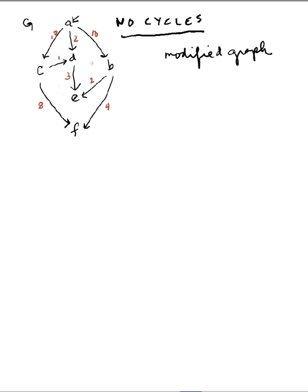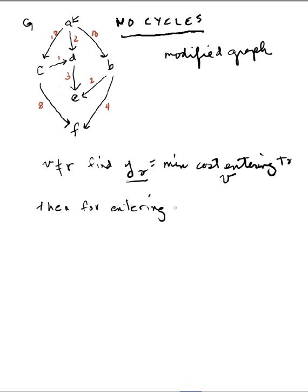In this modified graph, the only thing that will be modified will be the weights on the edges. And the way I modify it is for every vertex, for every vertex not equal to the root, find the edge that has the minimum cost. YV equals the minimum cost entering edge. And then when you find that, from every edge entering V, subtract YV, and that will form the new edge in my modified graph. For every entering edge V, subtract the minimum cost from the original cost.